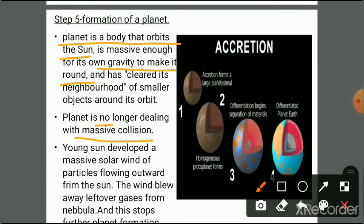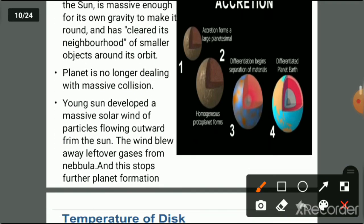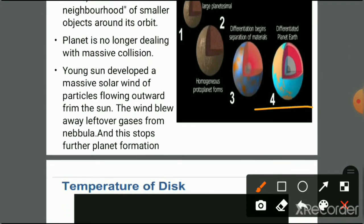Planet formation stops when the young Sun develops a massive solar wind of particles flowing outward. This figure explains the accretion process — planetesimals form protoplanets, which later become differentiated into layered planets. Planetesimals become protoplanets and then planet Earth.